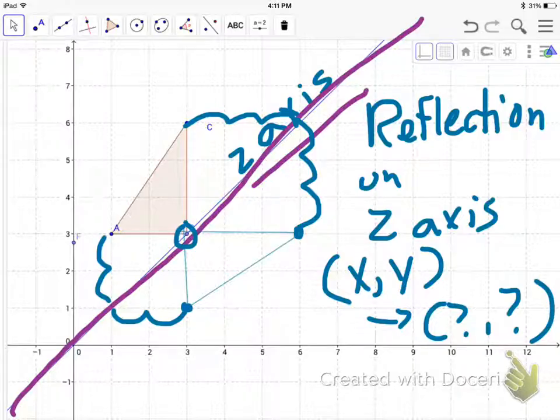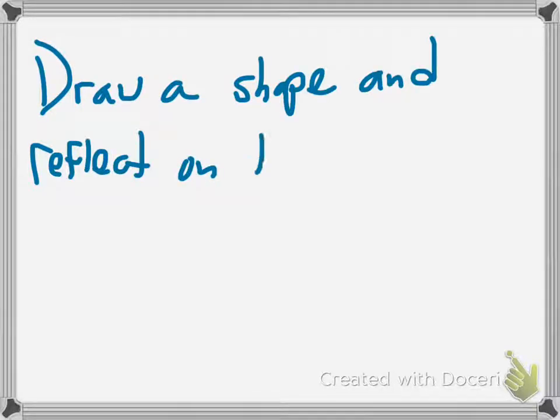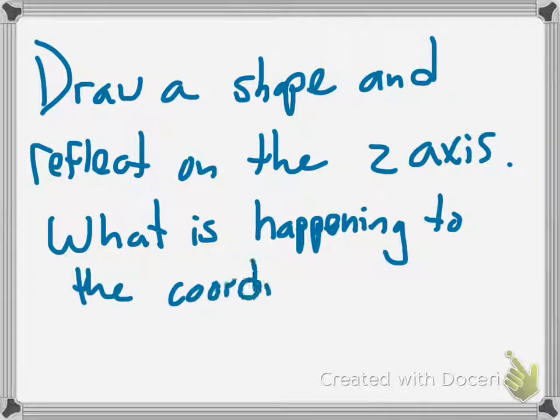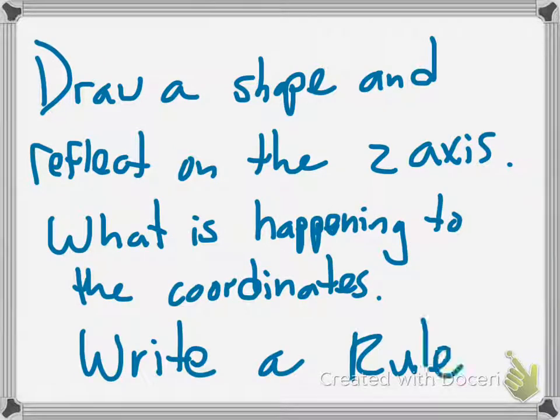So I will ask you the question, what is the rule? So I want you to draw a shape on graph paper, make a reflection on the z-axis, and tell me what is happening to the coordinates, and write a rule. Thank you.